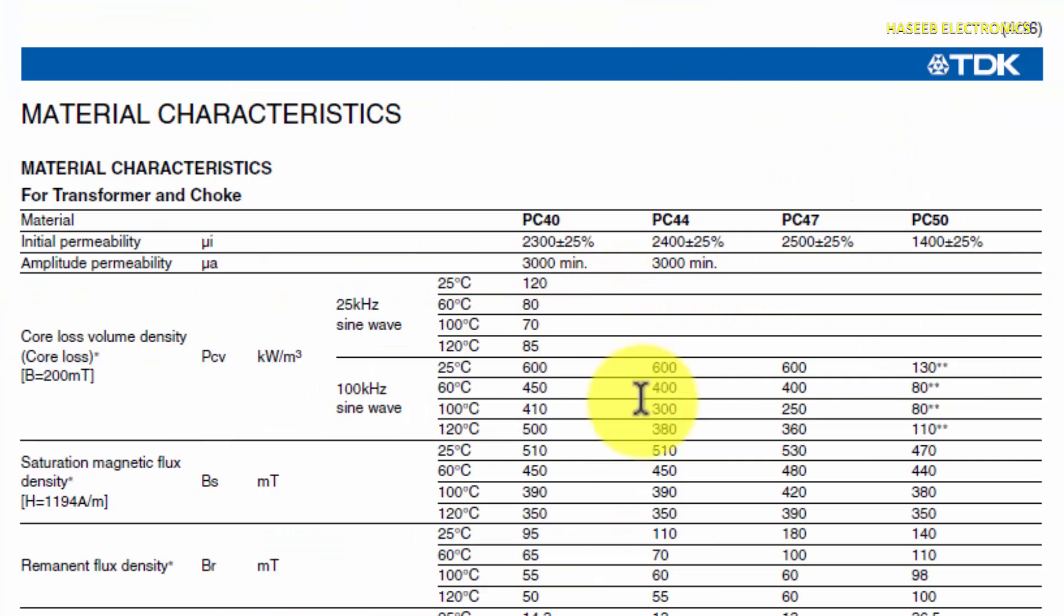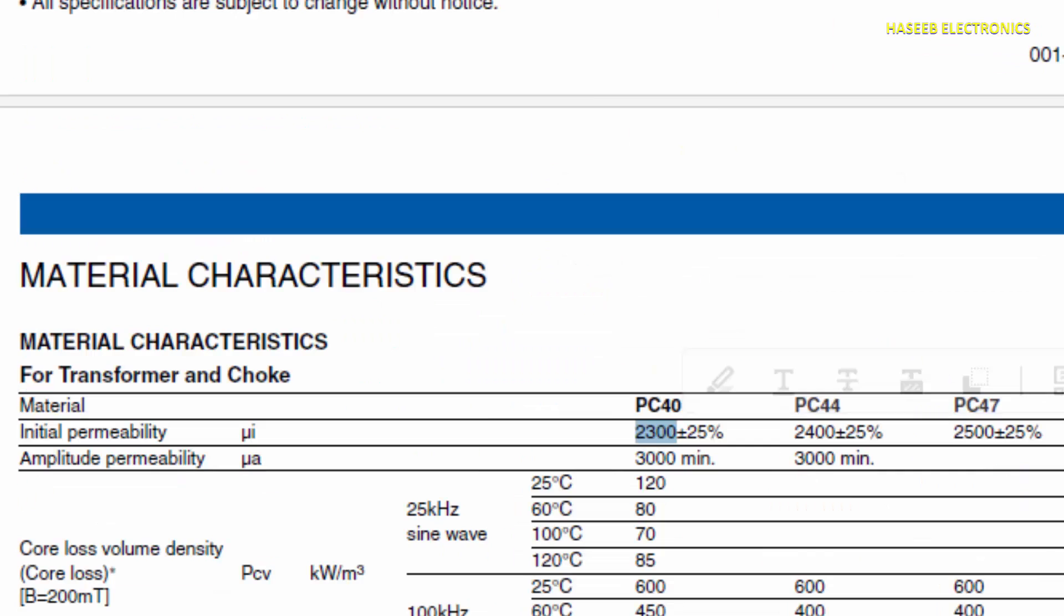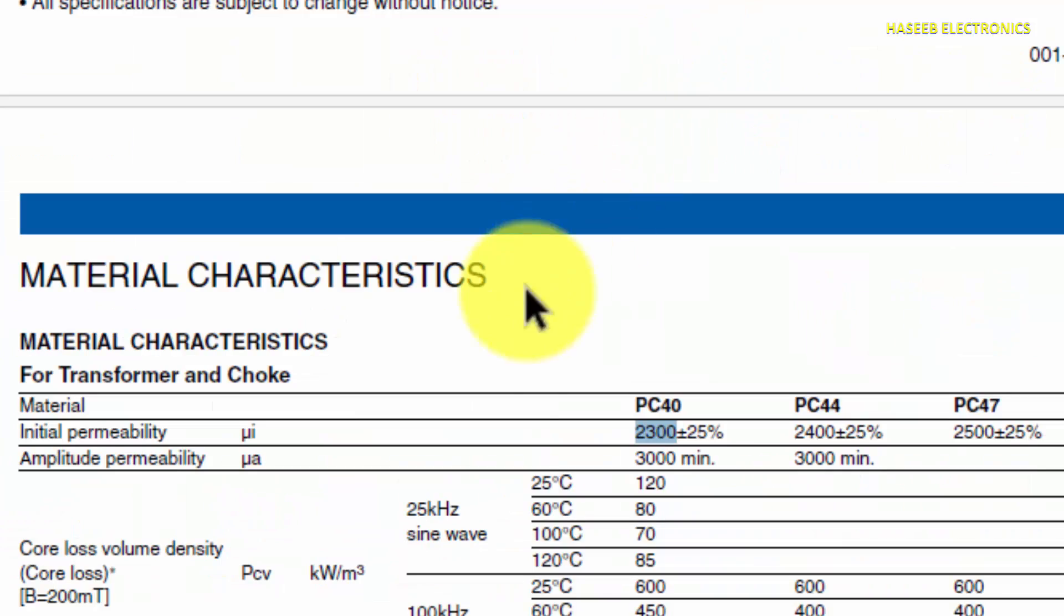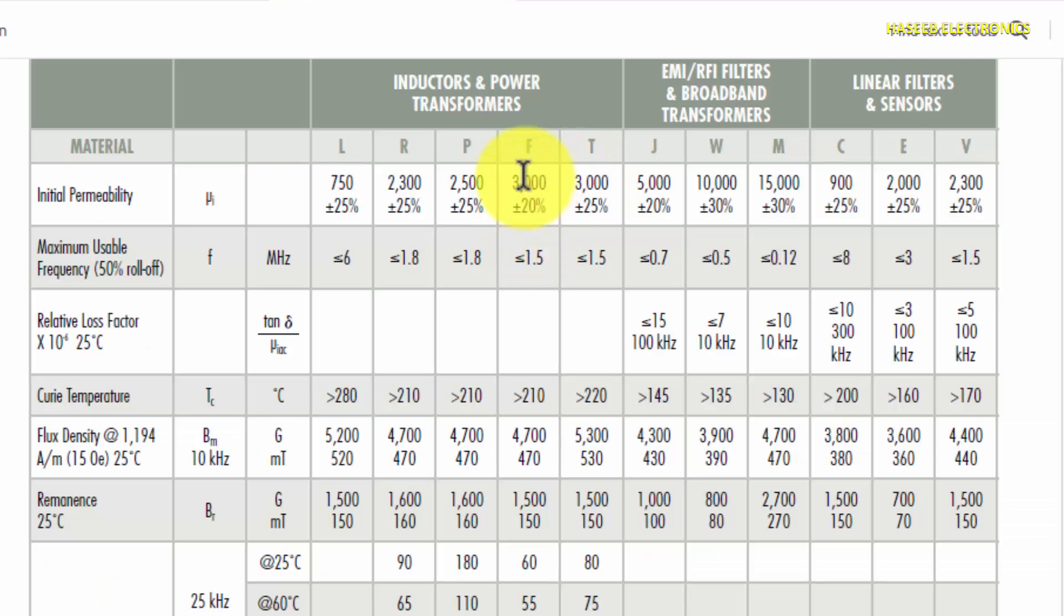TDK, this is PC40. PC40, that material has 2300, same as we have here. R material, R material 2300. TDK 2300. For example, if we check here F material, or T material, this is 3000 permeability value.